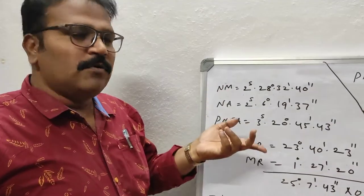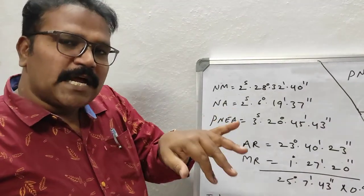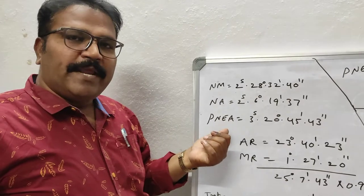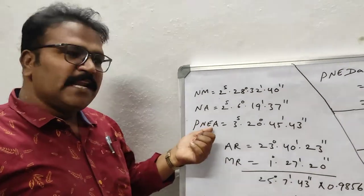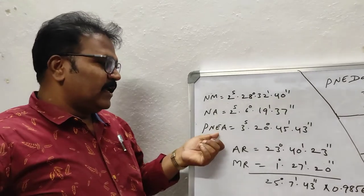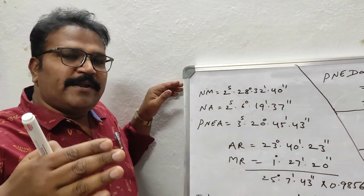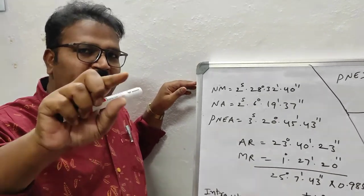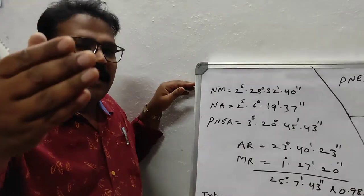NM means Natal Moon at this degree. NM also refers to Natal Ascendant at this degree. PNEA means Pre-Natal Epoch Ascendant. When the date of birth is given by Natu, from that date of birth, 9 months should be subtracted. Then we get the Pre-Natal Epoch Date.